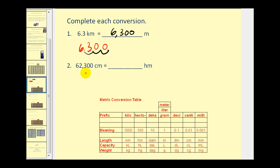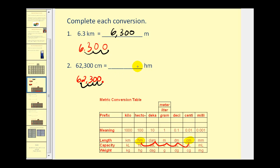On number two, we're converting 62,300 centimeters to hectometers. We identify the centimeter column and the hectometer column. We're moving from smaller units to larger units — four columns to the left — so we divide by ten to the power of four, or move the decimal point four places to the left. Starting with 62,300, we move the decimal four places left, giving us 6.23 hectometers.